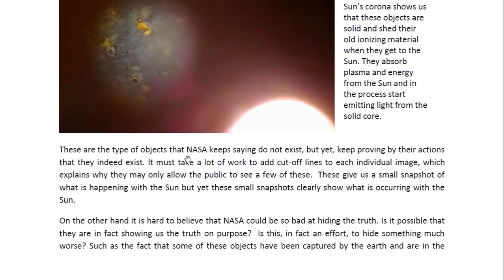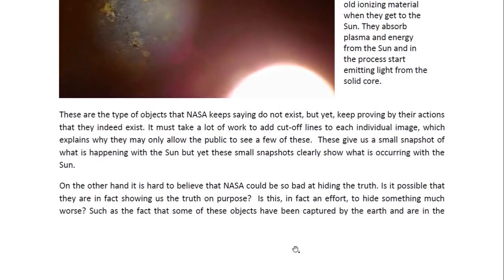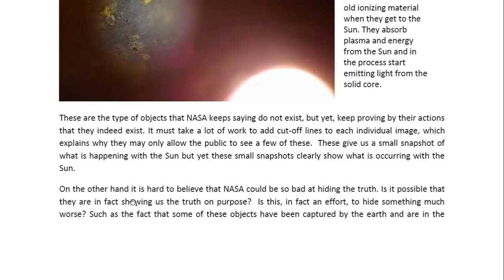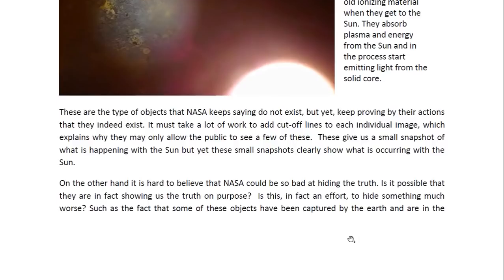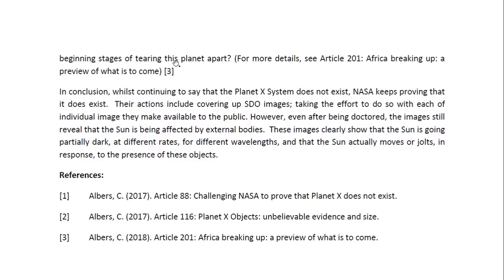Now, these are then the types of objects that NASA keeps saying do not exist, but yet keep proving by their actions that they indeed exist. It must take a lot of work to add cutoff lines to each individual image, which explains why they may only allow the public to see a few of these. These give us a small snapshot of what is happening with the sun, but yet these small snapshots clearly show what is occurring with the sun, and that is that it actually does go dark. Now, on the other hand, it's hard to believe that NASA could be so bad at hiding the truth. Is it possible that they are, in fact, showing us the truth on purpose? Is this, in fact, an effort to hide something much worse, such as the fact that some of these objects have been captured by the Earth and are in the beginning stages of tearing this planet apart?